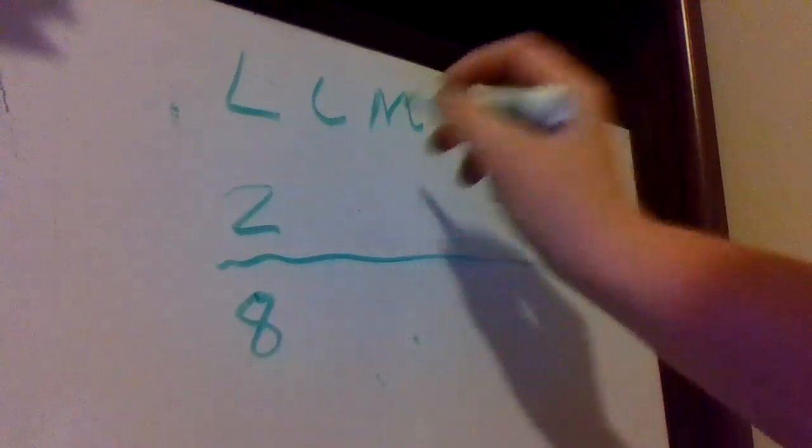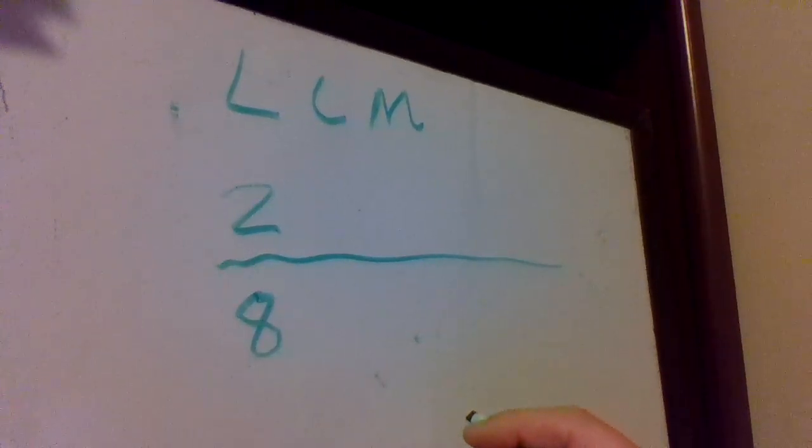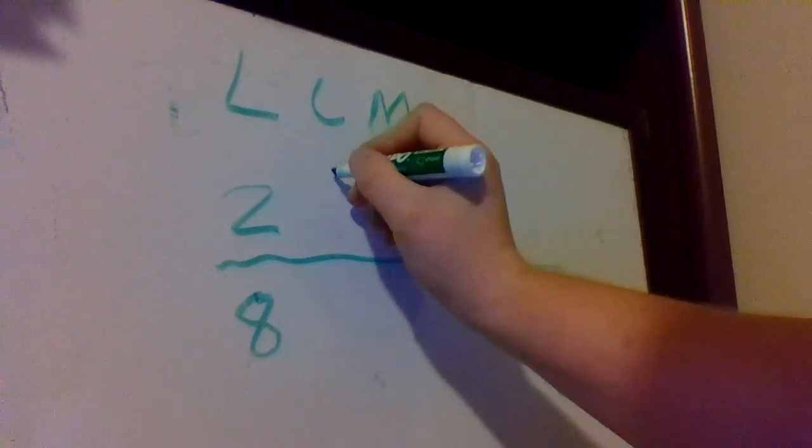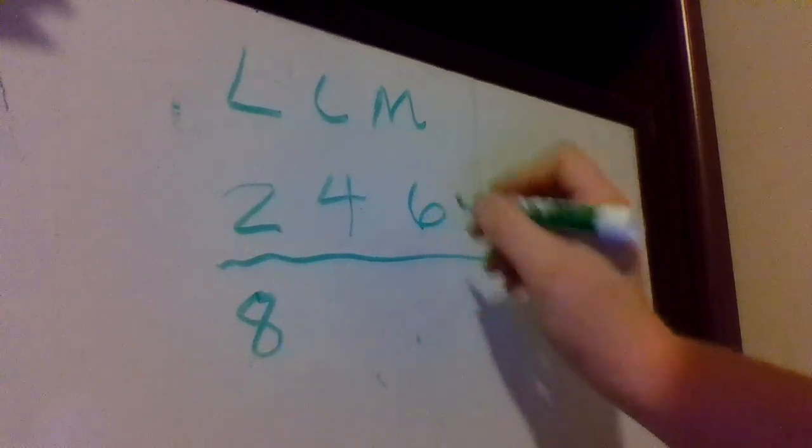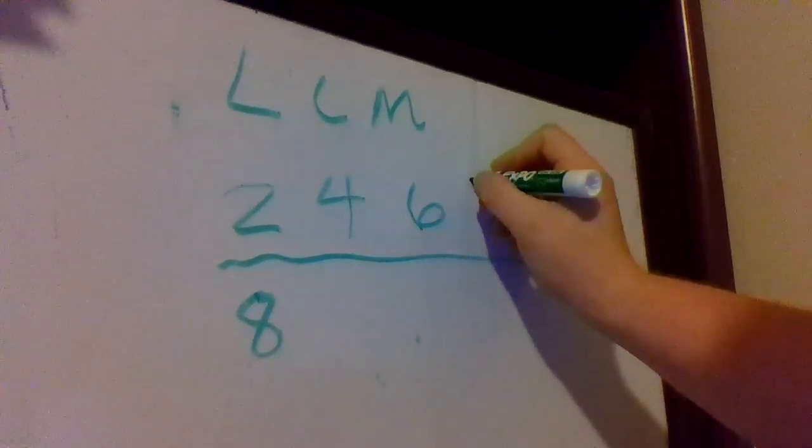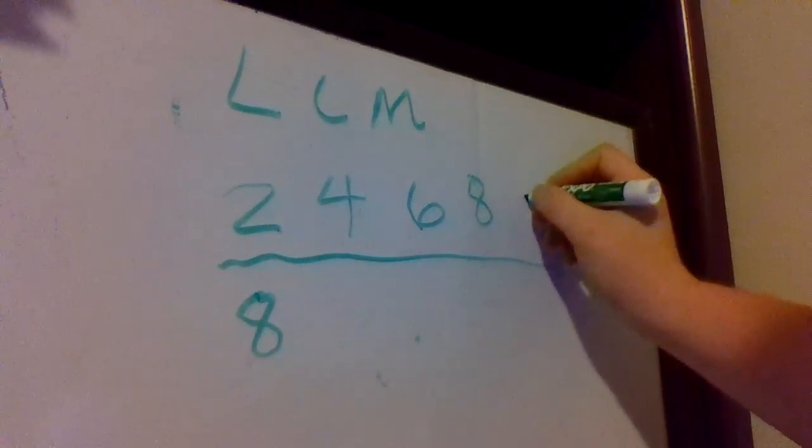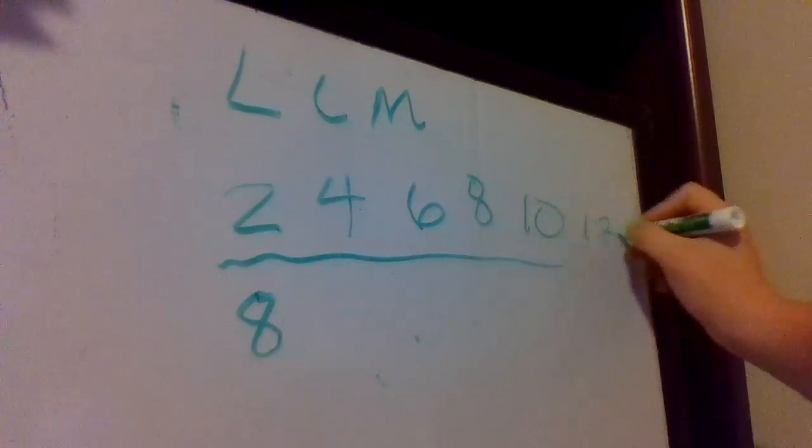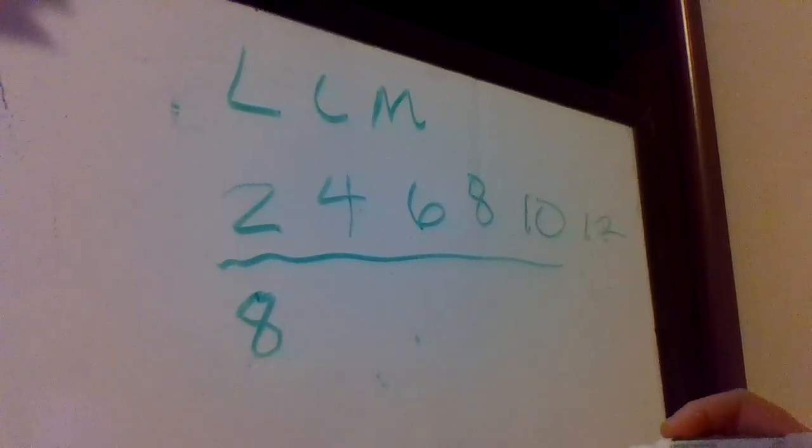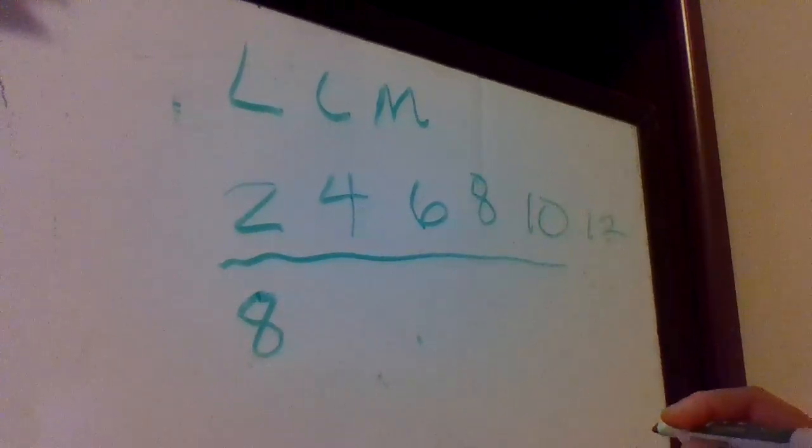Basically here's what you're gonna do—the LCM, the common multiples. So multiples are just all of the numbers that that number multiplies to give you. For instance, two times one is two, two times two is four, two times three is six, two times four is eight, two times five is ten, two times six is twelve.